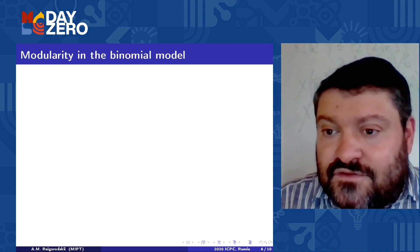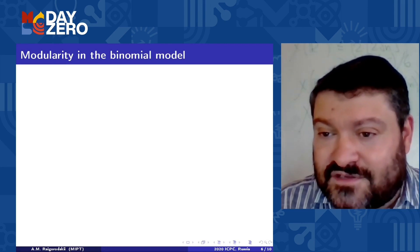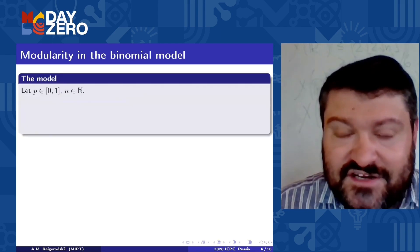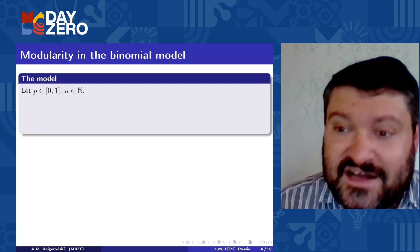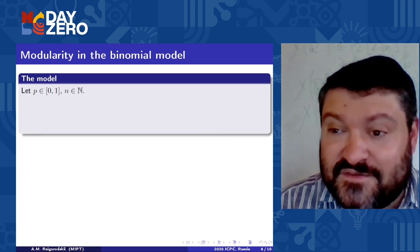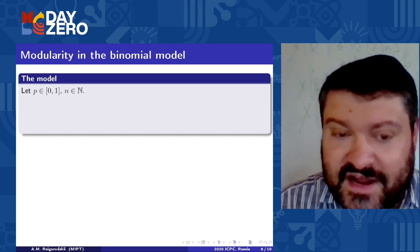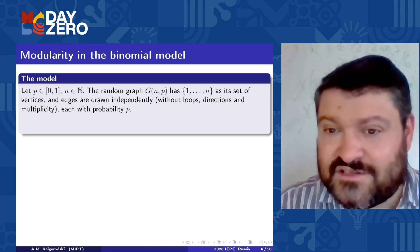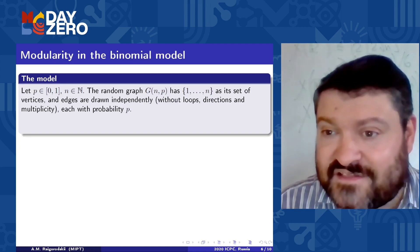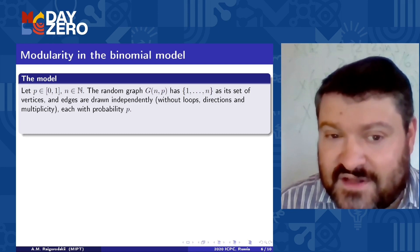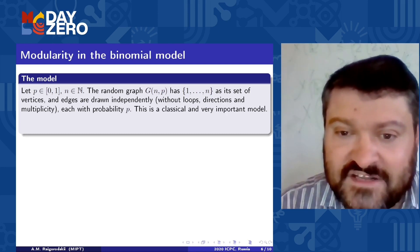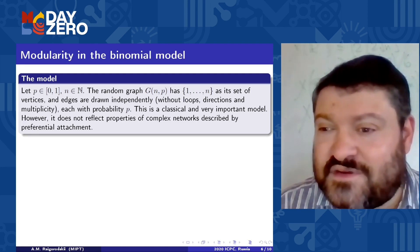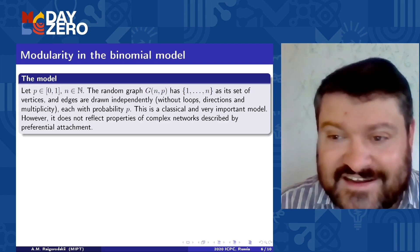But you may ask if you know something about random graphs, what happens in just in the binomial model, which is very classical and belongs to Erdos and Renyi, was considered for many years. Now I just remind you that the binomial model is as follows. We consider some real number P lying in the segment between zero and one, and we take some natural number N, the number of vertices. The random graph G of NP has the set from one to N as its set of vertices and the edges are drawn independently without any loops, any directions and multiplicity, each with probability P. And this is a classical model. It doesn't reflect properties of complex networks like web graphs. But for example, for connectivity properties, for properties of transportation networks, it's very important and very useful.